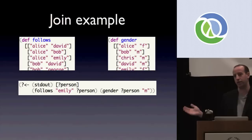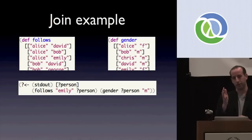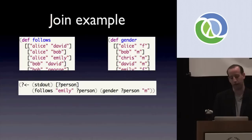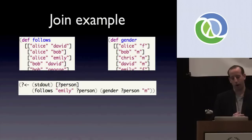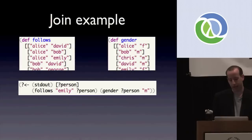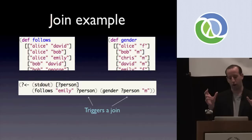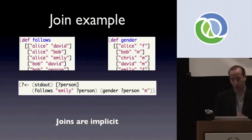Here's an example with a join. Given a follows dataset — where the first field is the person who follows the second field — and a gender dataset of name and gender, a query that gets all male people that Emily follows works by referencing the variable 'person' across both datasets. Cascalog sees the same variable used across two different data sources and automatically does an inner join. Joins are implicit in Cascalog, which is a much better way of thinking about joins than the explicit syntax in SQL.